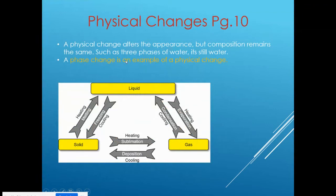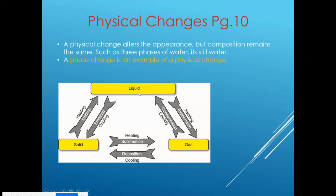A physical change alters the appearance but not the composition, such as the three phases of water. Water as a liquid, gas, or solid is physically different but it's still H2O — liquid water is H2O, water vapor is H2O, and an ice cube is H2O. When water changes state, it's a physical change but not a chemical change because it is still the same thing molecularly. A phase change is a great example of a physical change.